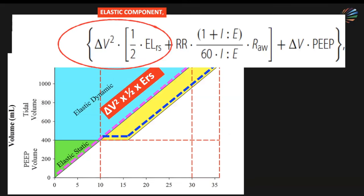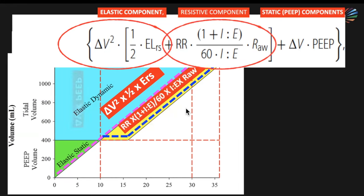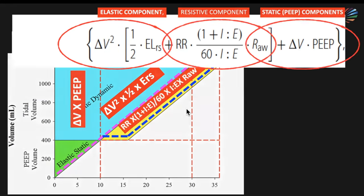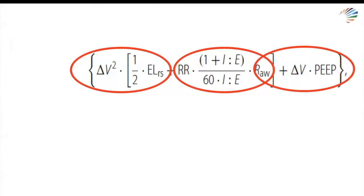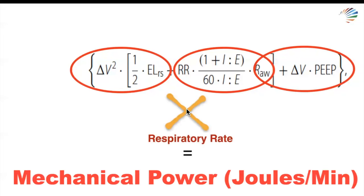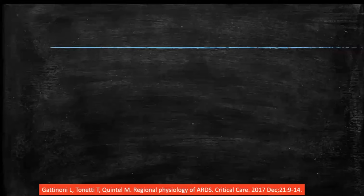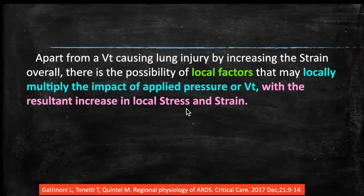The equation is derived from the equation of motion and has three components: the elastic component, the resistive component, and the static component. When all these components are multiplied by respiratory rate and expressed in joules per minute, the result is mechanical power.